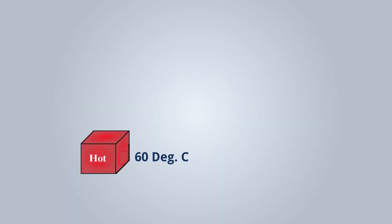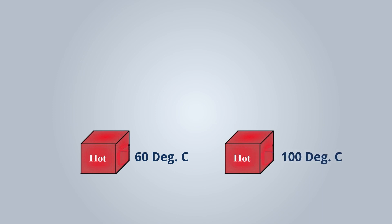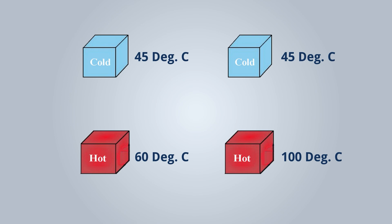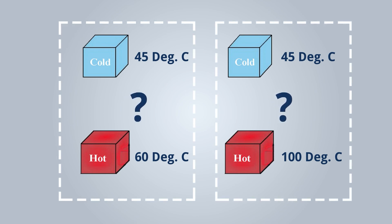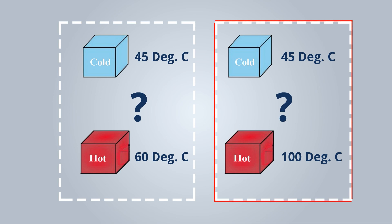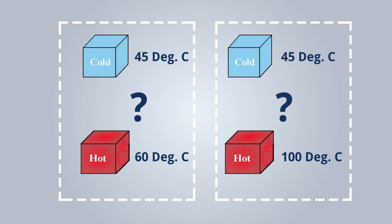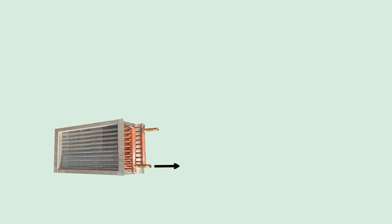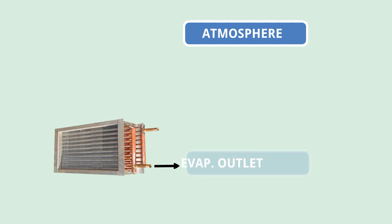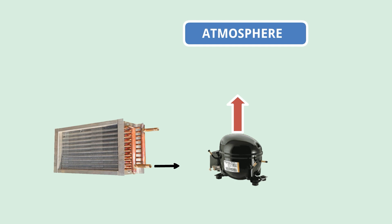Consider a hot body at 60 degrees centigrade and a cold body at 45 degrees centigrade versus a hot body at 100 degrees centigrade and another cold body at 45 degrees centigrade. Heat transfer will be faster in the second case because the temperature differential is greater. The evaporator outlet temperature is lower, and we need to remove that heat to the atmosphere. The compressor increases the temperature and pressure of the refrigerant — increasing the temperature differential — and helps to remove the heat. The compressor will not remove the heat directly, but it helps to remove it.